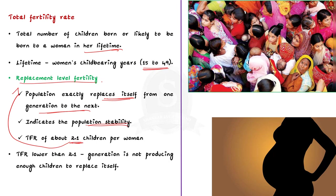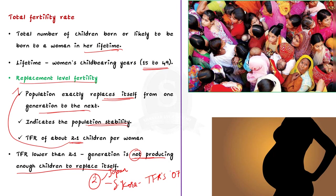A total fertility rate lower than 2.1 children per woman indicates that a generation is not producing enough children to replace itself, which will eventually lead to an outright reduction in population. Japan and South Korea are facing this situation right now. Presently, South Korea's total fertility rate is only 0.7, and if this continues, there will be a huge old-age population in the country with very little young population.